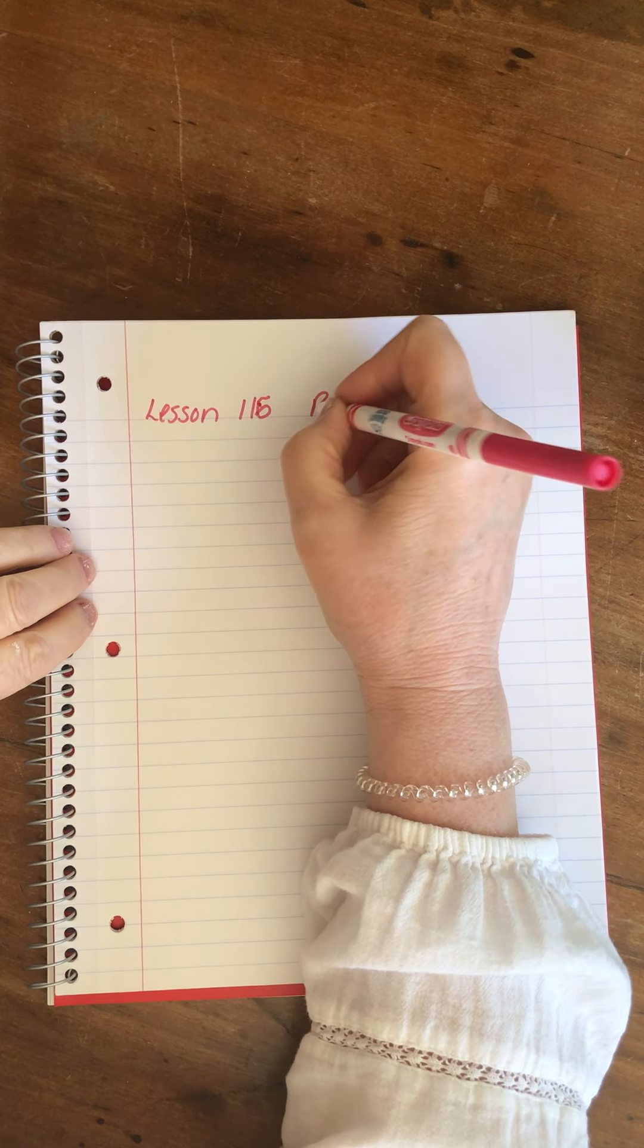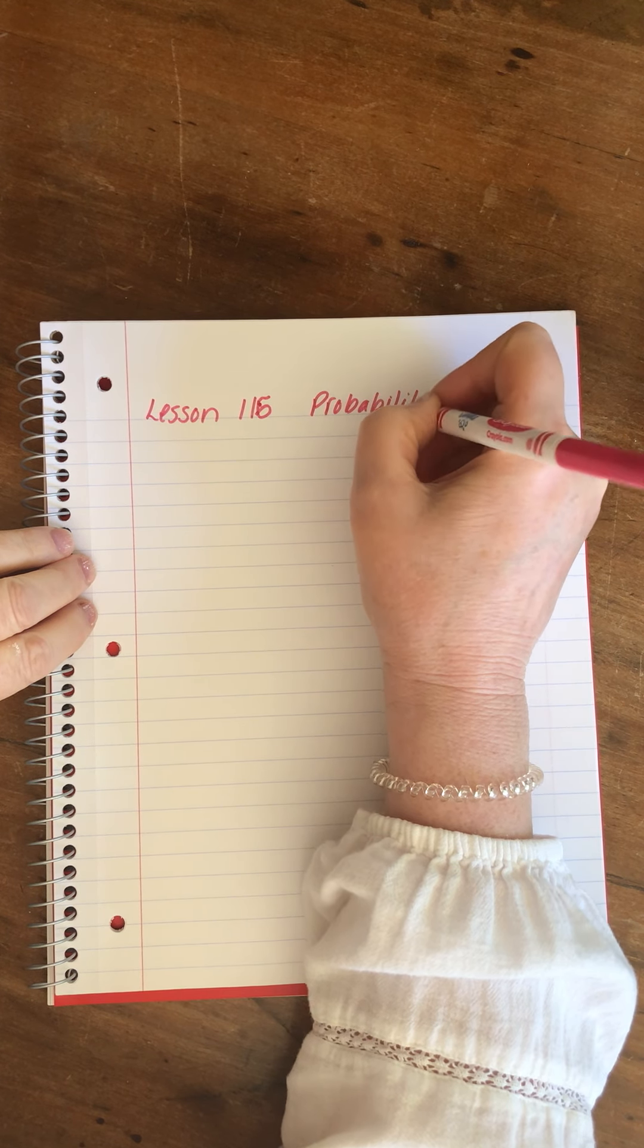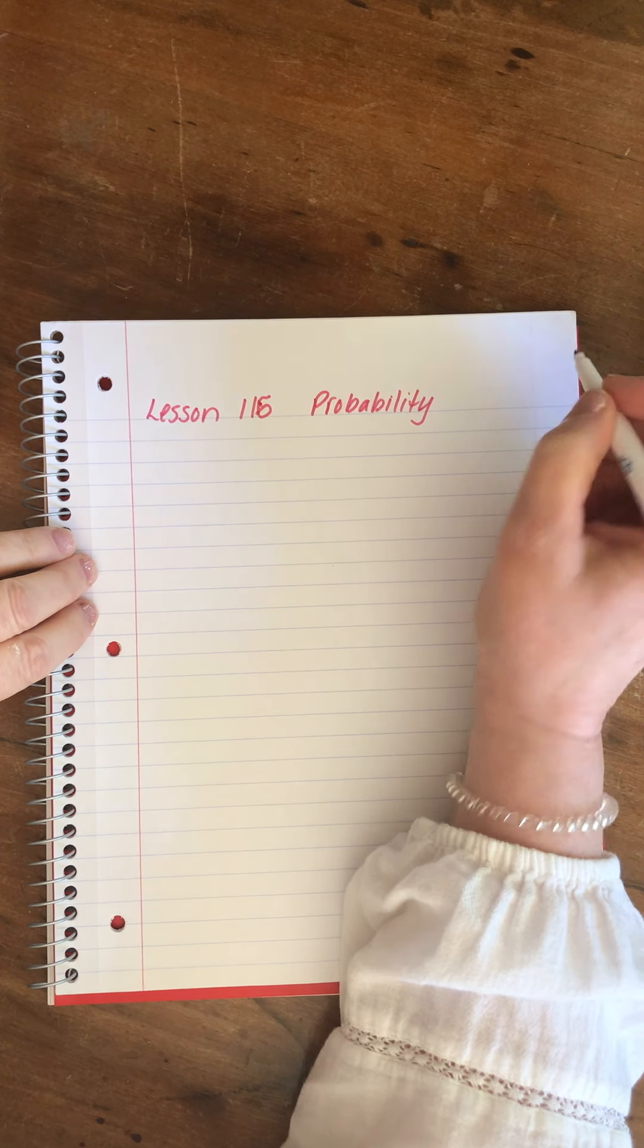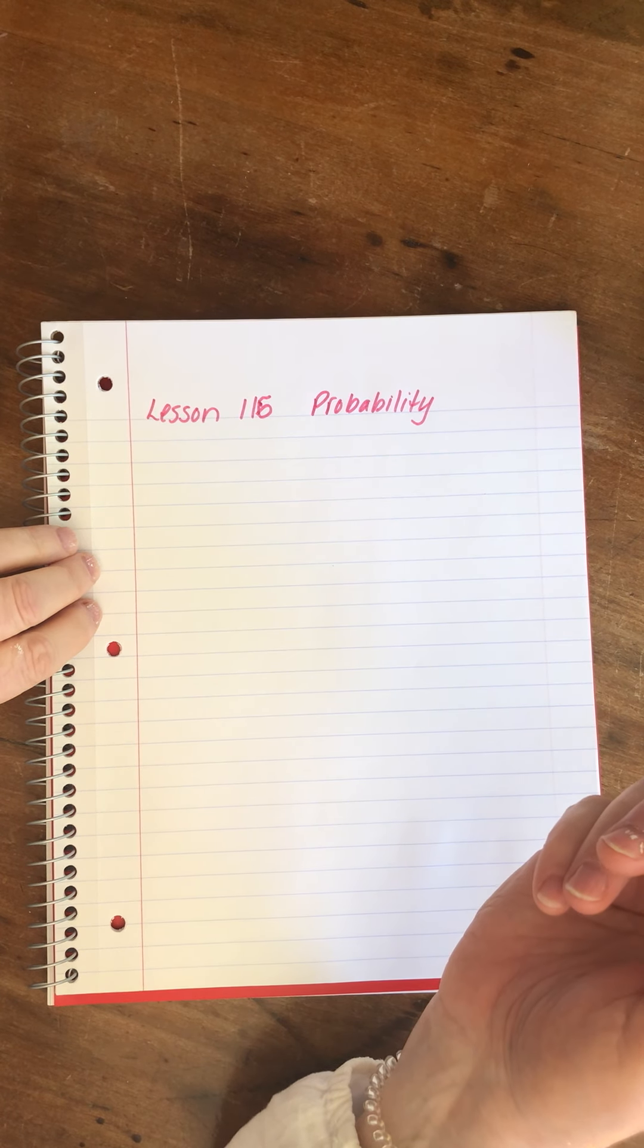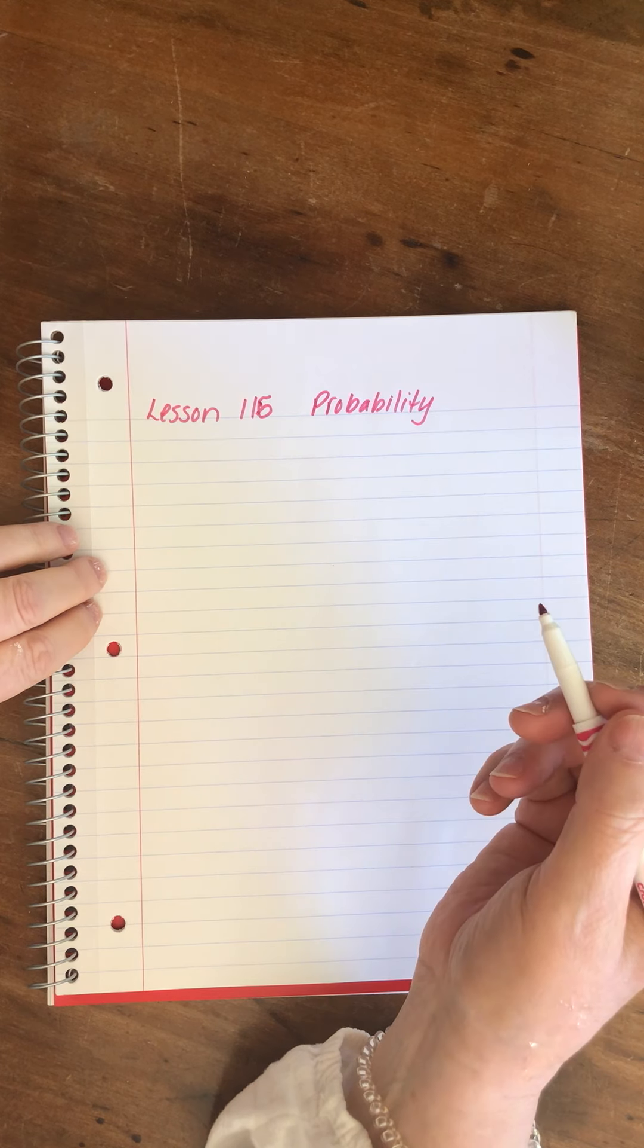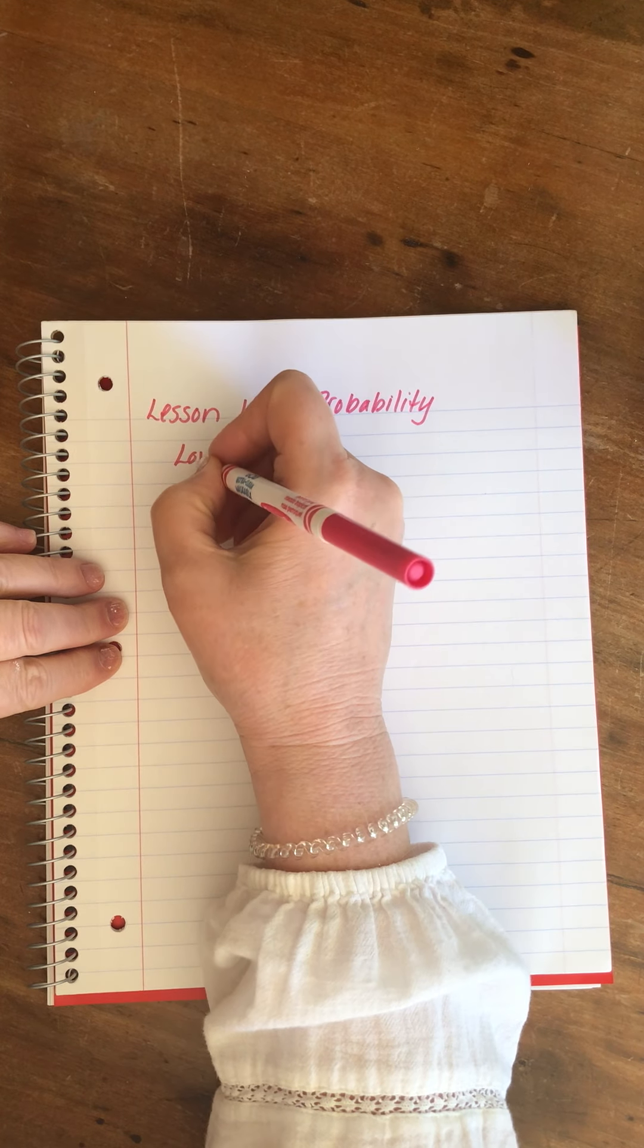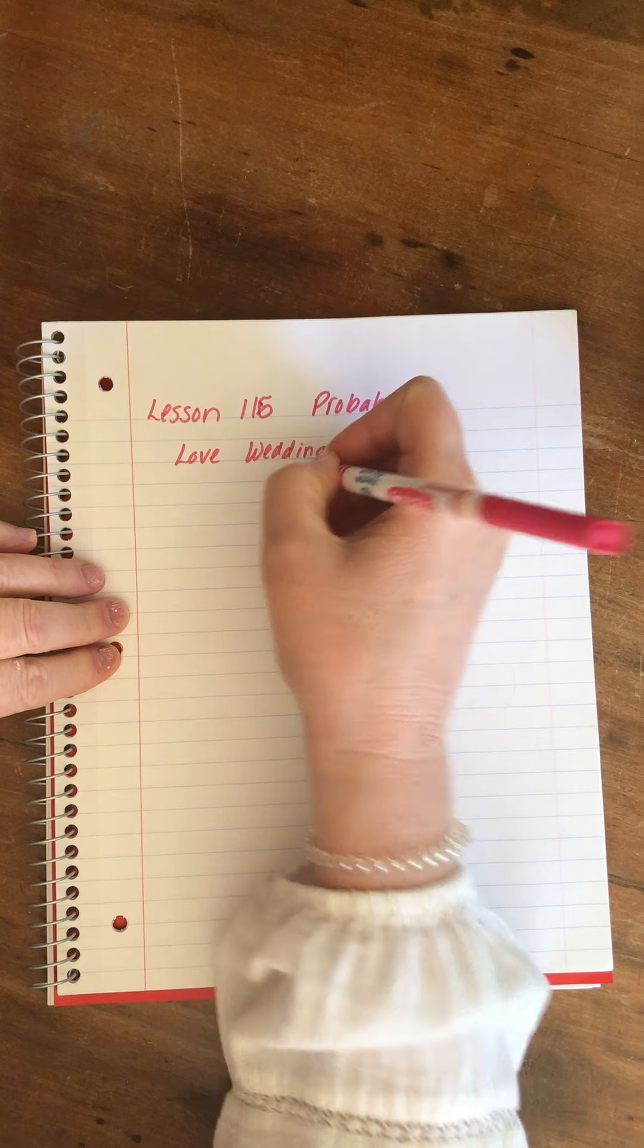It is not heavy on calculation, not super complex. It's kind of fun. We're going to talk about probability, and there are fun, easy calculations, usually about games of chance or everyday situations. It's super practical. I also saw a movie on this, it was about a wedding called Love, Wedding, Repeat.